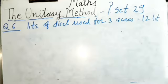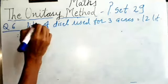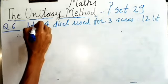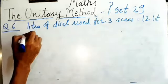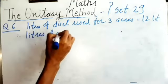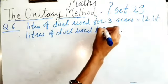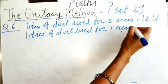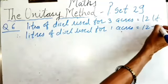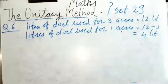So what I have to do — first I need to find litres per 1 acre. Therefore, litres of diesel used for 1 acre: 12 divided by 3 equals 4 litres. Meaning to plough 1 acre of land, the tractor needs 4 litres of diesel.